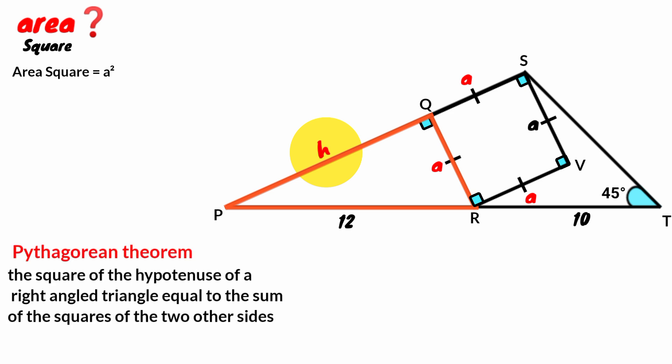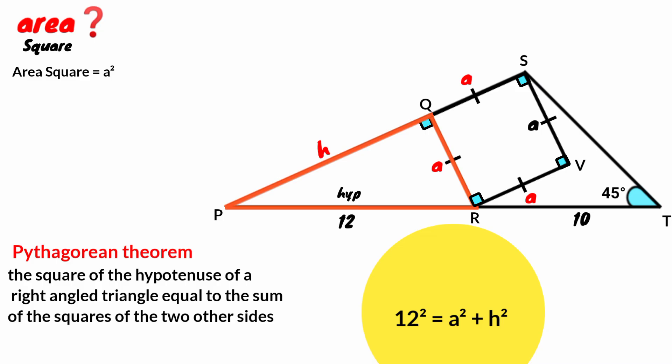The Pythagorean theorem states that the square of the length of the hypotenuse of a right angle triangle is equal to the sum of the squares of the length of the two other sides. The hypotenuse is the side facing the right angle. So by Pythagoras, 12 squared equal to A squared plus H squared.